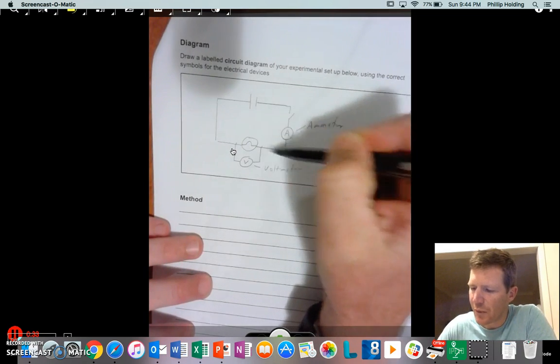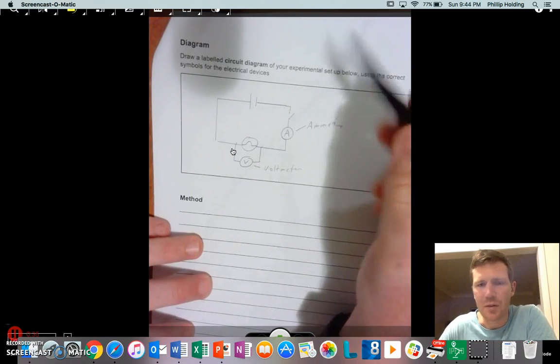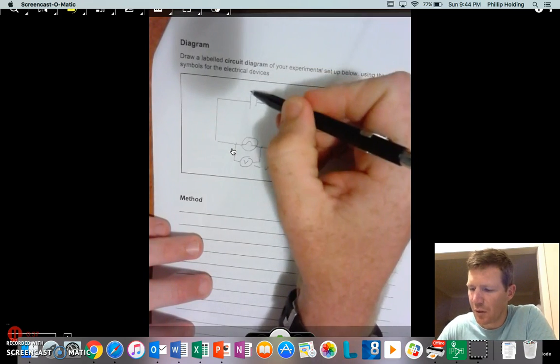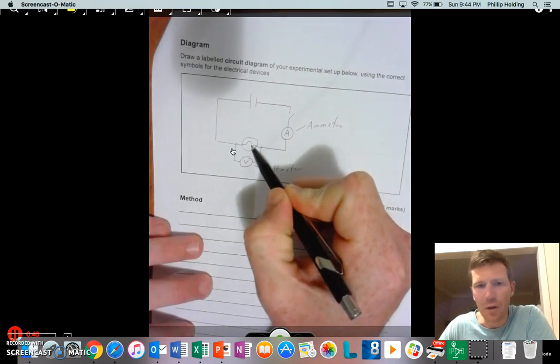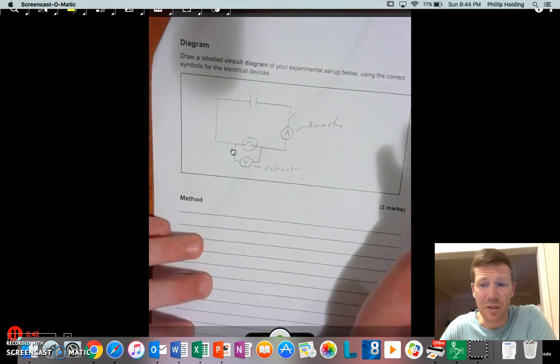So first of all, we undo the circuit. In this circuit, we've got our cell, we've got a switch here, and we've got a globe, which is obviously different to the one that you're doing, but good for an example.